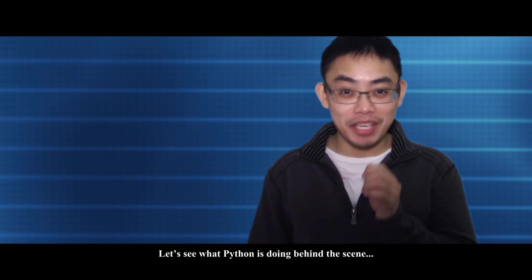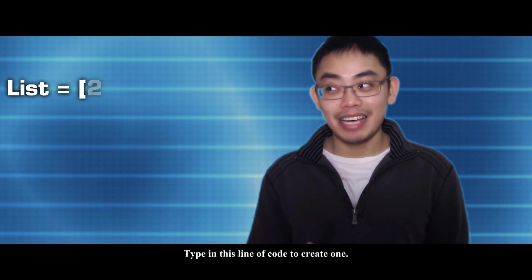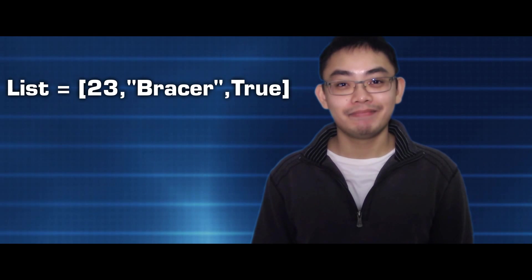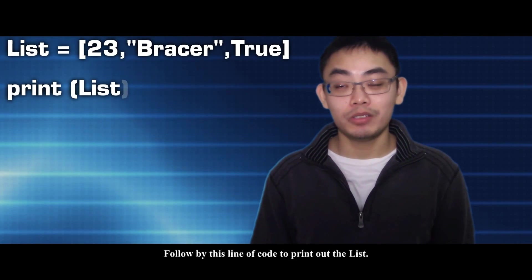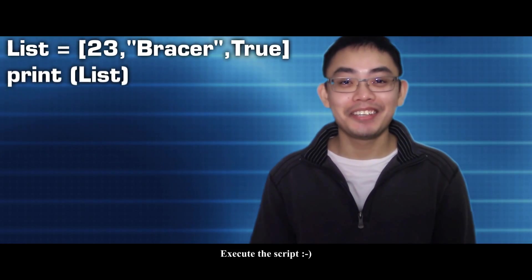This is the end of the boring stuff. Back to visuals. Let's see what Python is doing behind the scene when you create a list variable. Type in this line of code to create one, followed by this line of code to print out the list. Execute the script.